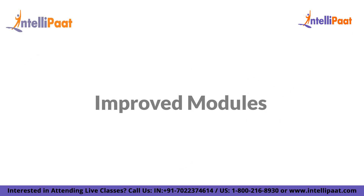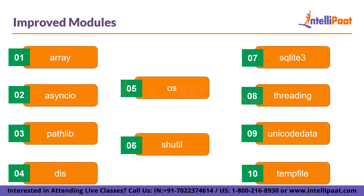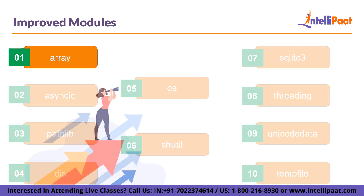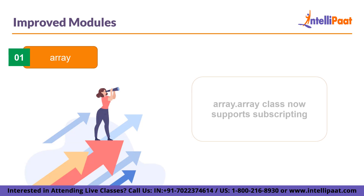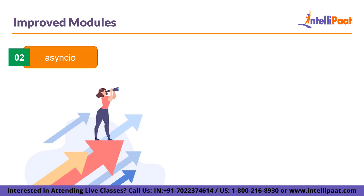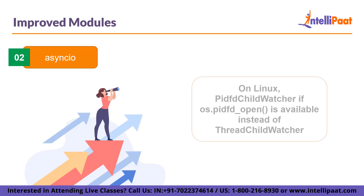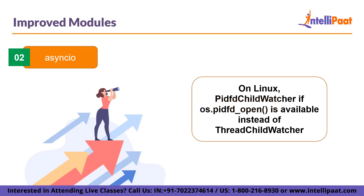Let's take a look at some of the improved modules included in the new Python 3.12 release. For the array module, the array.array class now supports subscripting, making it a generic type. For the asyncio module on Linux, if os.pidfd_open is available, the PidfdChildWatcher can be used instead of ThreadedChildWatcher. There are also some deprecations in the child watcher classes, and it is recommended to not manually configure a child watcher.